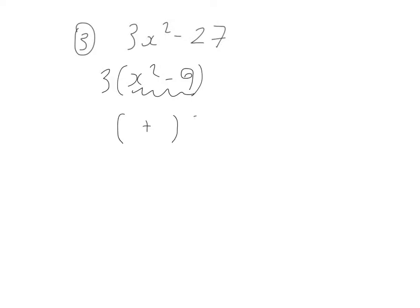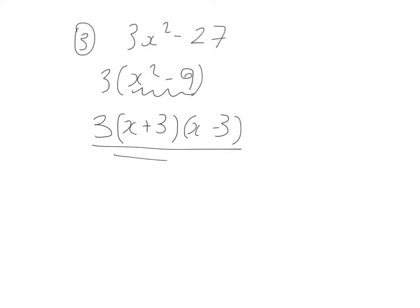So, bracket with a plus, bracket with a minus. The square root of x squared is x, and the square root of 9 is 3. Don't forget that there's a 3 at the front — and that's the final answer: 3(x plus 3)(x minus 3).